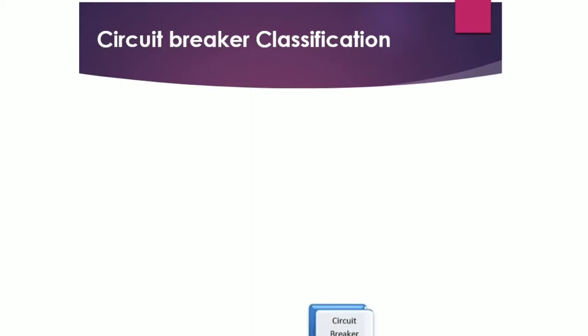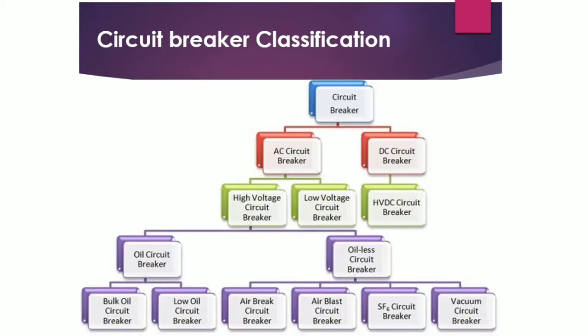In the classification of circuit breakers, there are two main types: AC circuit breaker and DC circuit breaker. The AC circuit breaker has two subtypes: high voltage and low voltage. The DC circuit breaker has one type: HVDC circuit breaker, which means high voltage DC circuit breaker. The high voltage circuit breakers in the AC system also have two types: oil circuit breaker and oil-less circuit breaker. The oil circuit breaker has two subtypes: bulk oil and low oil circuit breaker.